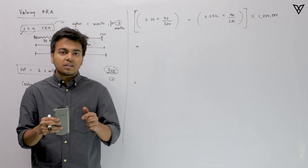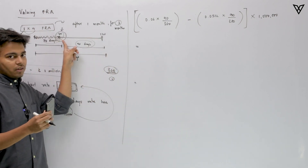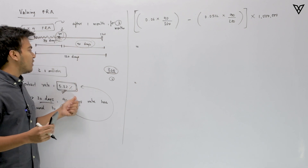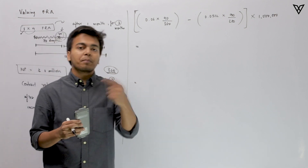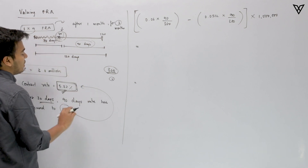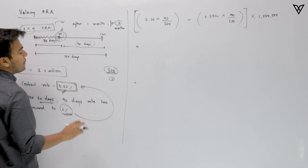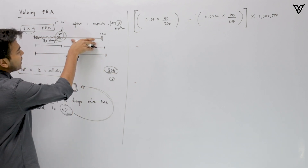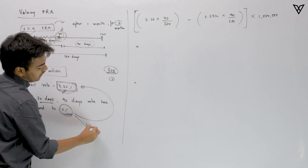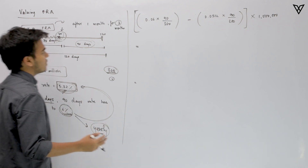The long party is making a profit because they agreed to borrow at a lower rate initially. If they hadn't done that, they would have to borrow at the higher rate. So the long party wins when interest rates go up, and the short party gains when interest rates go down. To calculate the profit, we take the difference of the two rates — but since the contract is for 90 days and these are annual rates, we must de-annualize them.